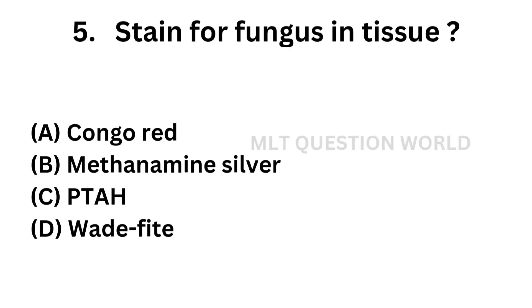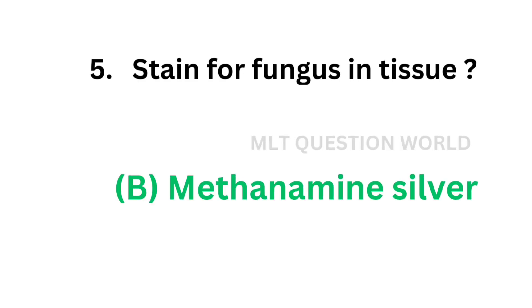Question number five: Stain for fungus in tissue — Option A: Congo red, Option B: Methenamine silver, Option C: PTAH (phosphotungstic acid hematoxylin) stain, Option D: Weigert stain. The correct answer is Option B — methenamine silver. Methenamine silver stain is used for fungus in tissues.